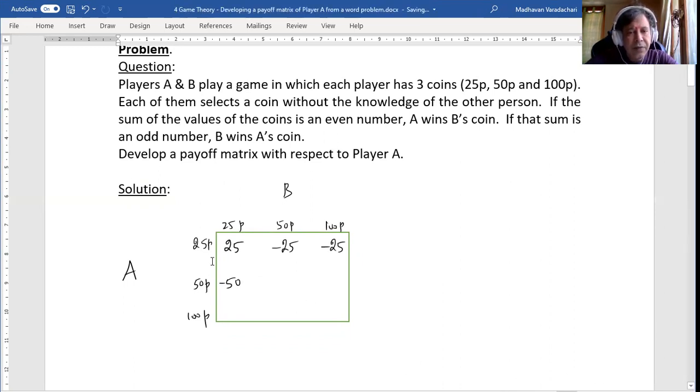Here, 50 and 50, it is 100. 100 is an even number, which means A will receive B's coin. So 50 paise will be received by A from B.